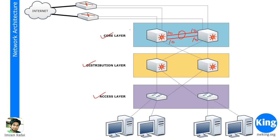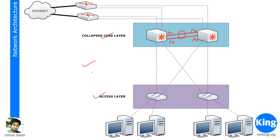So traffic management and distribution of traffic happens in a much more logical, efficient way that's easy for troubleshooting. Now, if your company is not that big and you don't have sufficient IT resources, there is another approach known as the collapsed core, where the core layer and distribution layer are combined. This architecture is known as the collapsed core architecture.